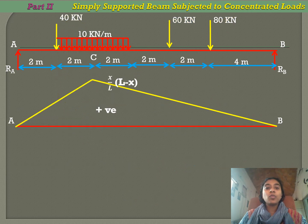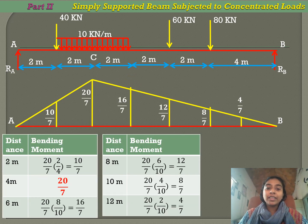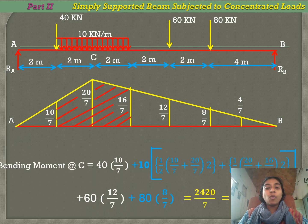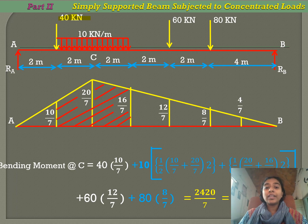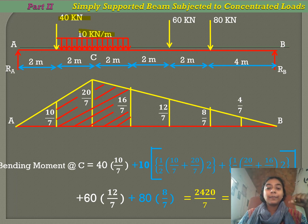Similarly for bending moment, you calculate using the formula (X/L) × (L − X), find the other ordinates, and then compute the bending moment at C. For concentrated loads, multiply the load intensity by the ordinate under the load. When it is a UDL, multiply by the area under the load in the influence line diagram — that gives you the bending moment at C.